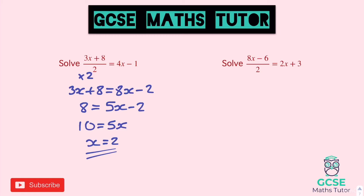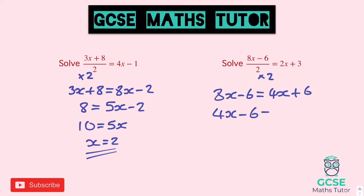Over to the next one — again, times both sides by 2, so we get 8x minus 6 equals 4x plus 6. Subtract the 4x from both sides — the smallest one — and that leaves us with 4x minus 6 equals positive 6. Add the 6 to both sides: 4x equals 12. Then again dividing by 4, and 4 fits in perfectly, so x equals 3.